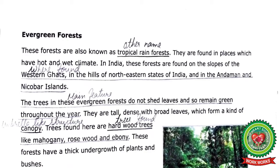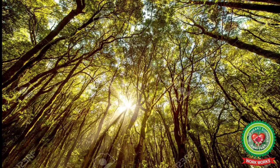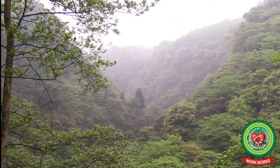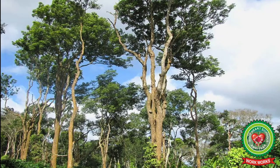The other name for evergreen forests is tropical rainforests. They are found in places with a hot and wet climate — on the slopes of the Western Ghats, in the hills of the northeastern states of India, and in the Andaman and Nicobar Islands. The trees do not shed their leaves and remain green throughout the year. They are tall and dense with broad leaves forming a canopy, and the trees found here include mahogany, rosewood, and ebony.